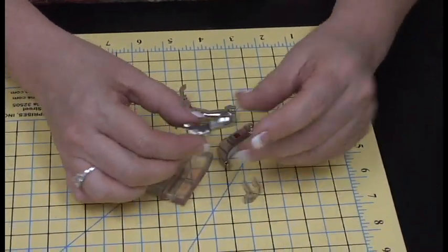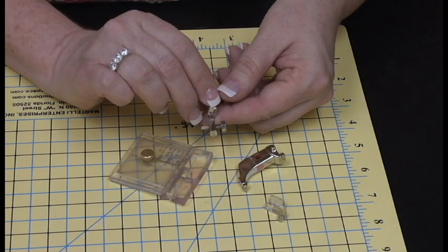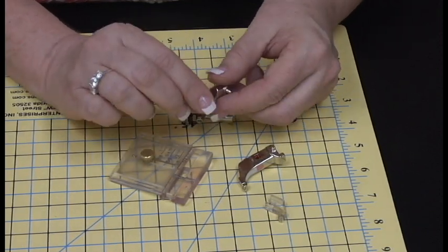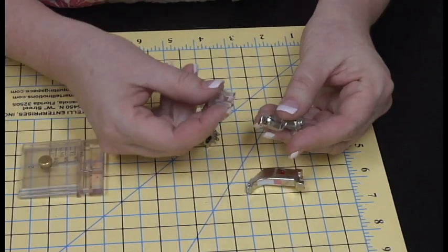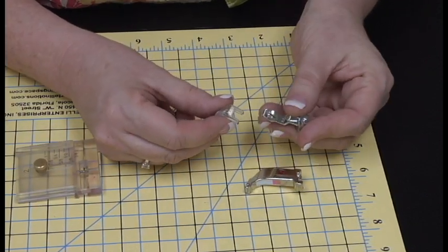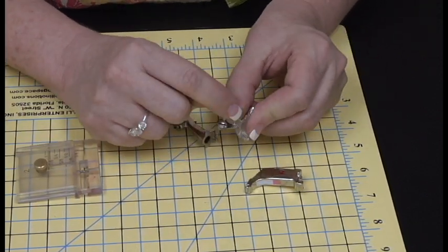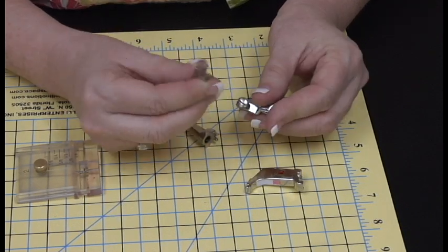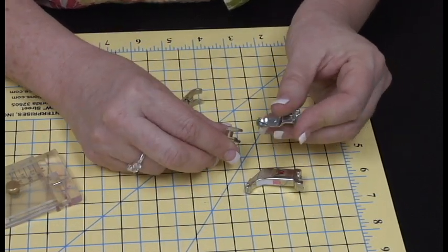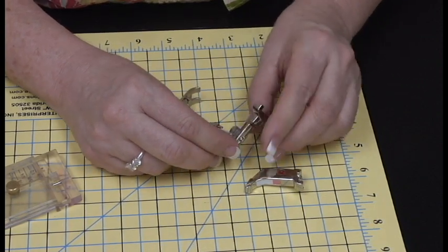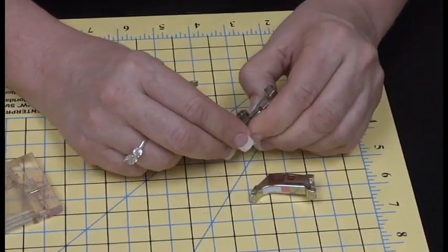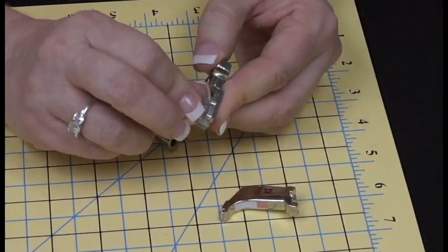This is one option; this is a second option. I want to show you how this works. This comes from our stitch in the ditch foot package with six of these adapters. You can see what I call the U right here. I'm going to turn it sideways and have the U to the screw, push that up, and push this over. When I tighten this up, that's going to stay on here.